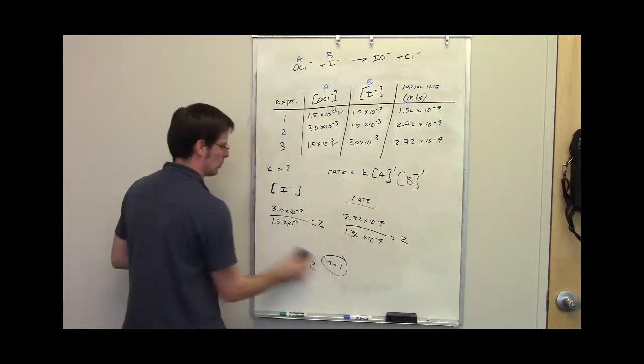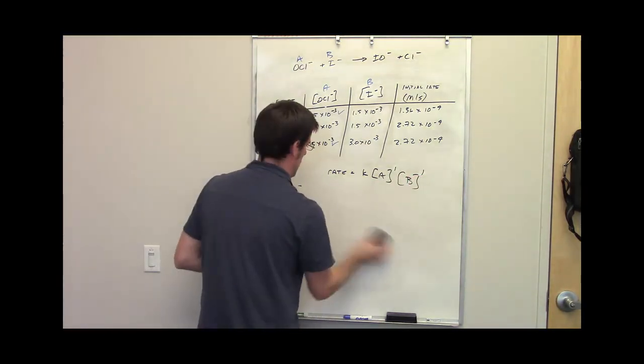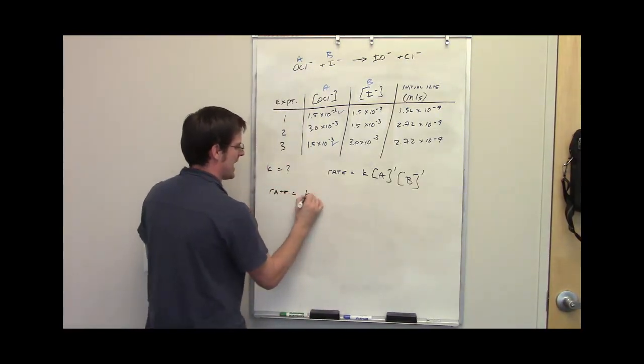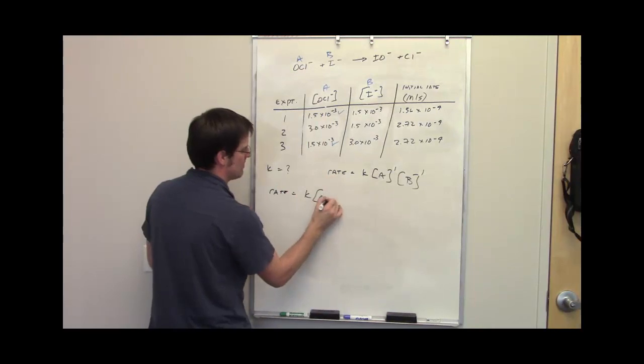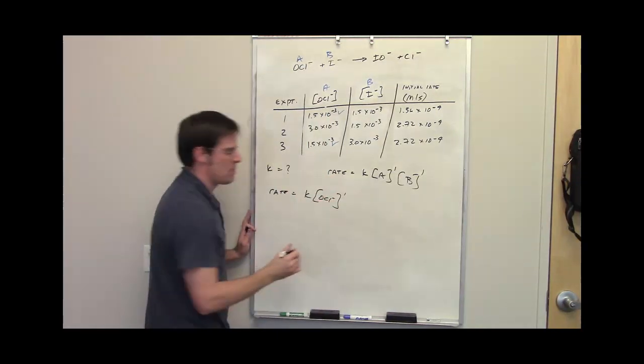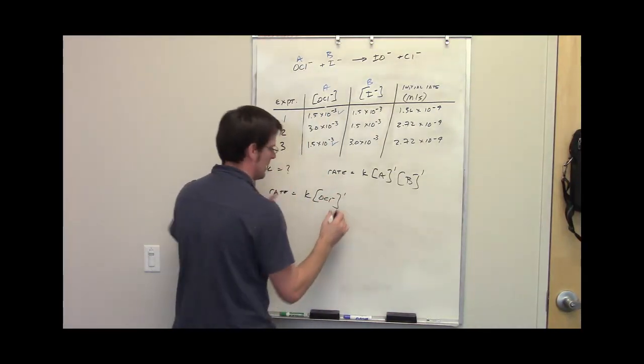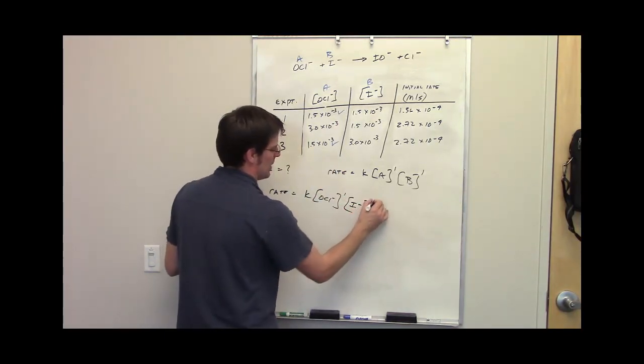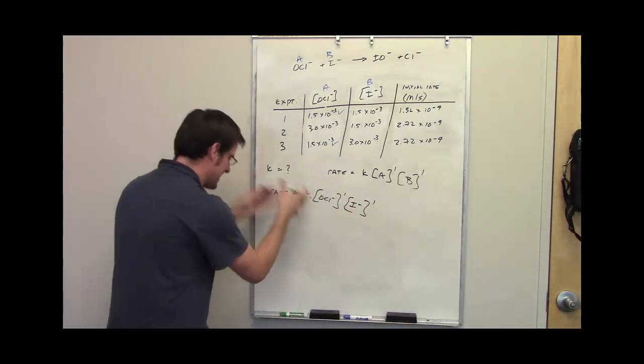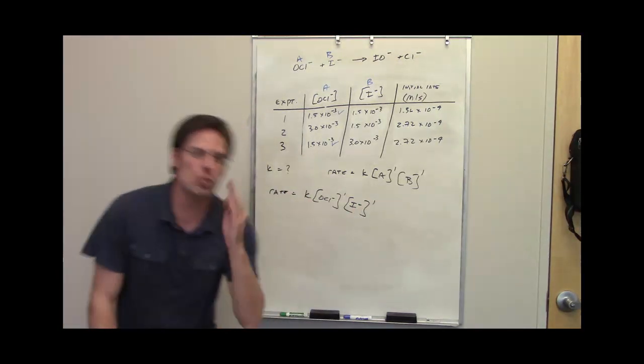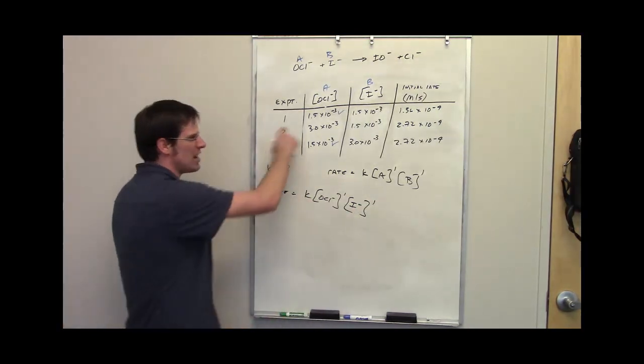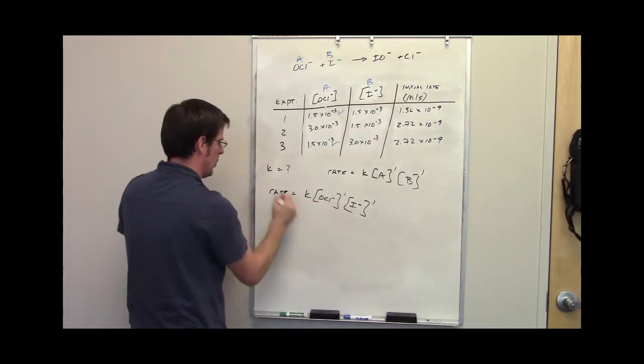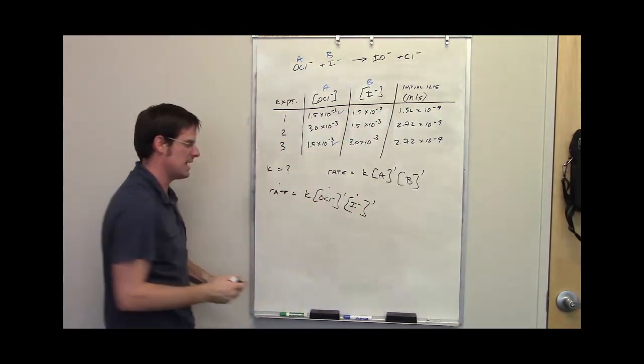Let's rewrite our rate law. I've got rate equals K multiplied by the concentration of hypochlorite raised to the 1st power, times the concentration of iodide raised to the 1st power. It's asking me to solve for K. How do I do that? I pick whichever experiment I want and throw in the numbers into these holes and solve for K.